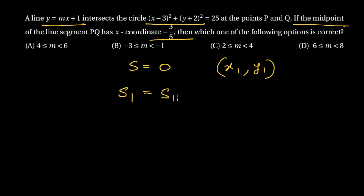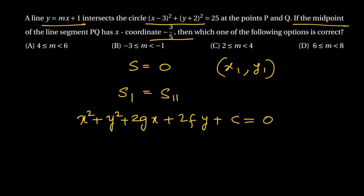I hope you are familiar with this equation. Suppose the circle equation is x² + y² + 2gx + 2fy + c = 0. After discussing this method, I will also give you a geometrical approach which is much easier, but you should also know this approach. The equation of the chord whose midpoint is (x₁, y₁) is given as T = S₁₁.